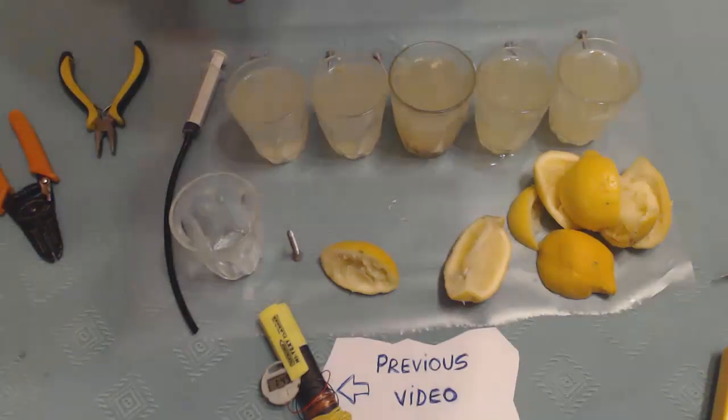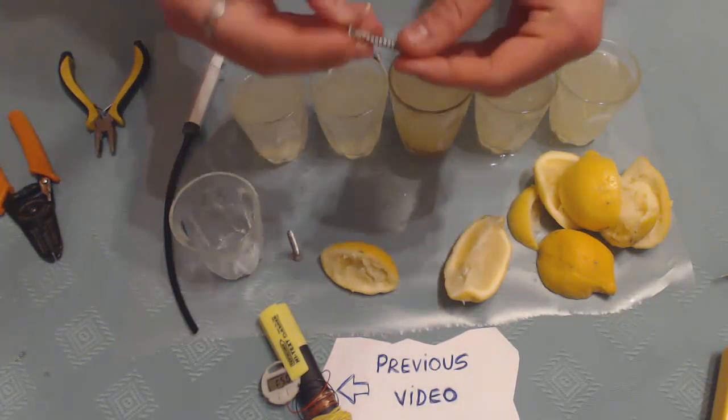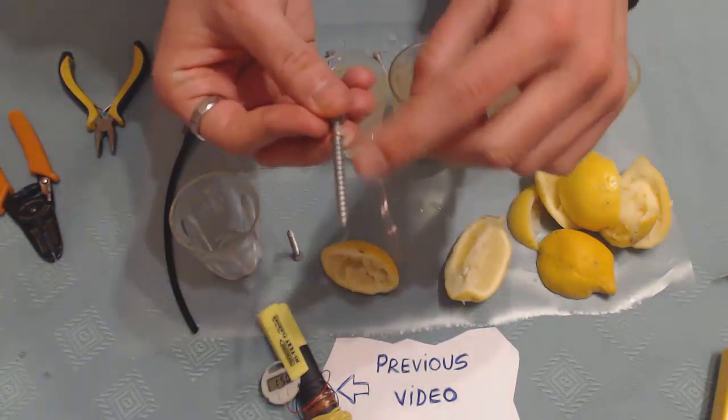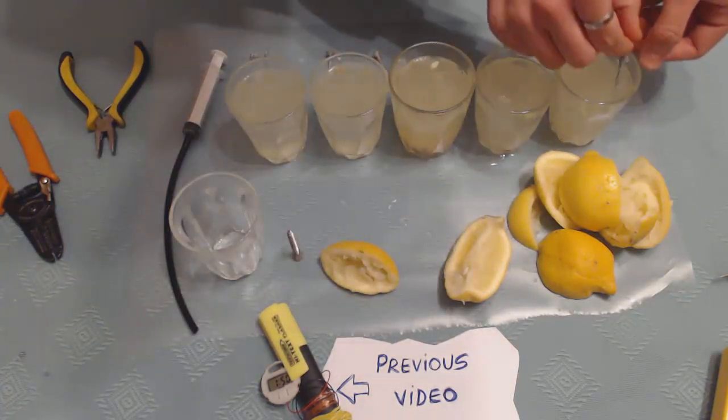Hello guys, today I want to show you how to build a battery using lemon juice, water, some zinc screws and copper wire. You have to put them like this and then in the glasses.